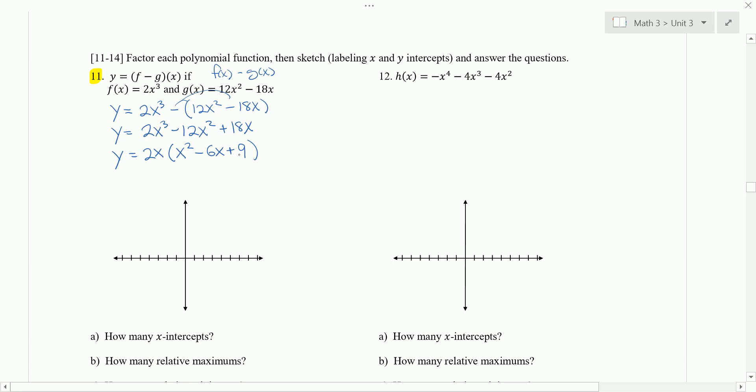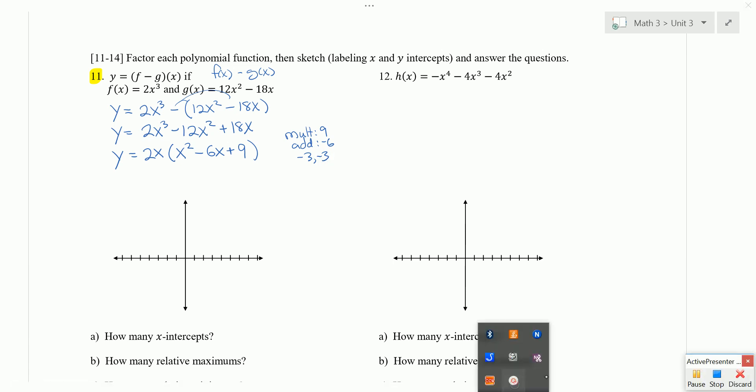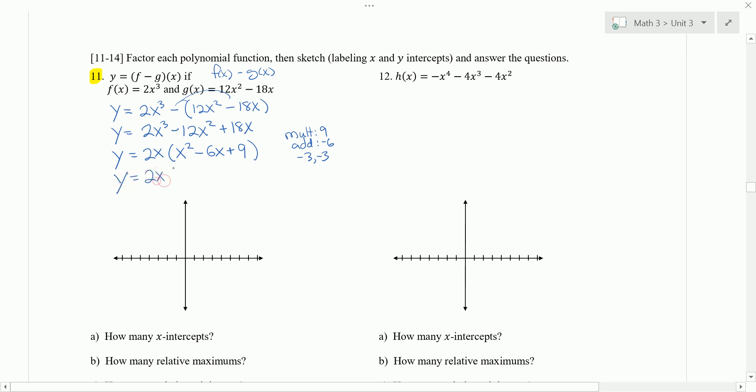And then continue to try to factor. We had x squared minus 6x plus 9. We're looking for two numbers that multiply to 1 times 9 and add to negative 6. And negative 3 and negative 3 work. So now we can factor this thing and we get y equals 2x times x minus 3 times another x minus 3. We could write x minus 3 squared, but it's fine to leave it this way.